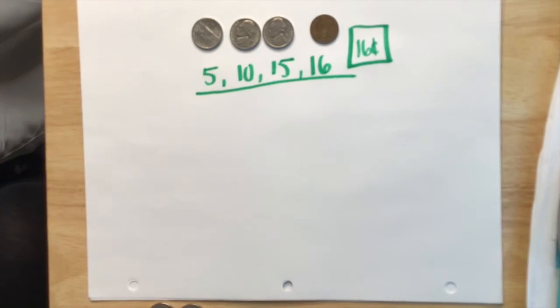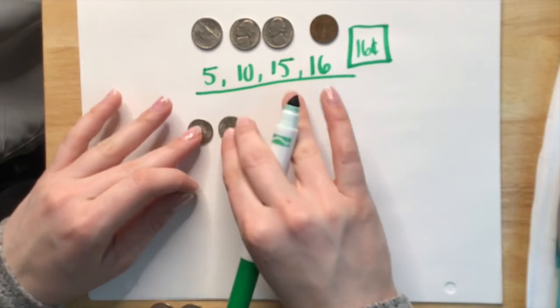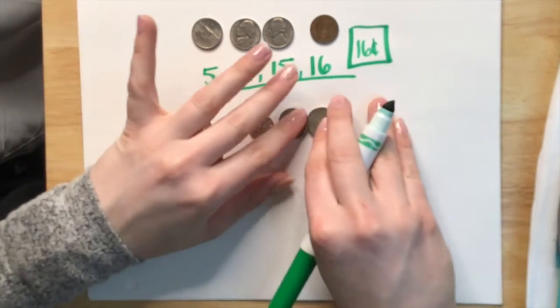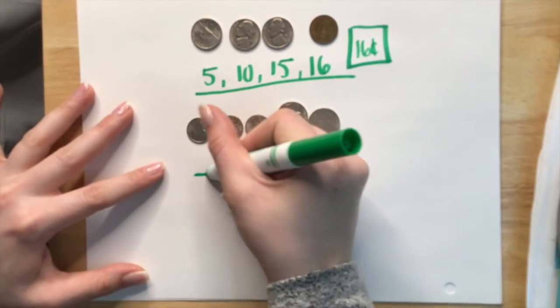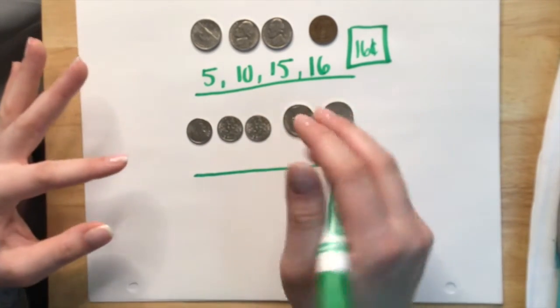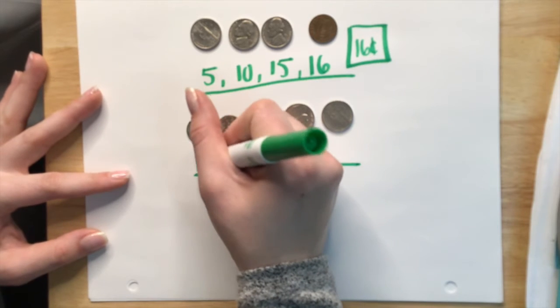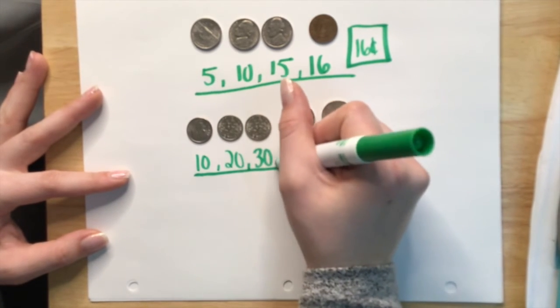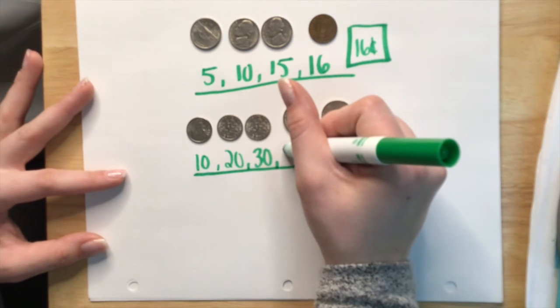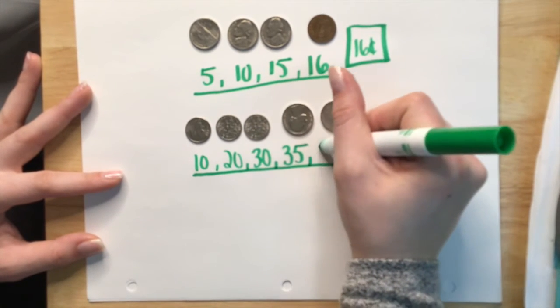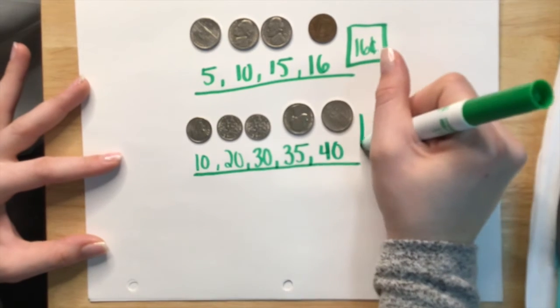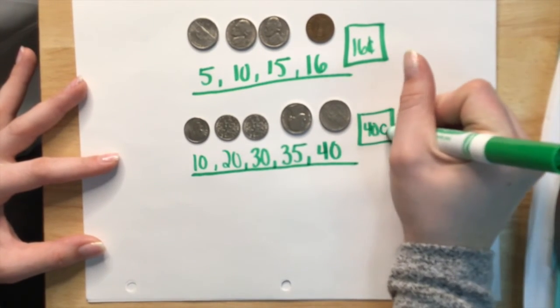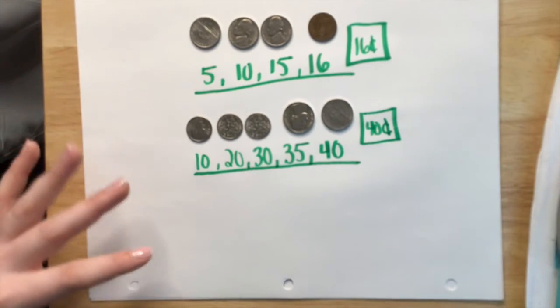Let's try a different example. Let's start with dimes and let's throw in two nickels. I'm going to go ahead and count those up. So we know a dime is worth 10 cents. So we're going to start by counting 10, 20, 30, and then a nickel is worth 5 cents. So we're going to add 5, 35, 40. This would be 40 cents. I'm making sure that I'm putting my cent symbol just so I know how much that is.